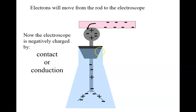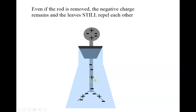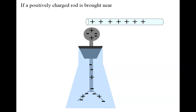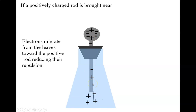If you take the rod away, all the electrons go back to normal, the leaves fall back down, and everything is normal. If you touch the electroscope with the charged rod, you'll end up negatively charging everything permanently — or as permanently as things are. When you remove the rubber rod, the leaves stay put, and in order to get it neutral again, you'll have to ground it. If you bring a positively charged rod near a negatively charged electroscope, you could temporarily reduce those effects by attracting some electrons up, and the leaves would fall back down, reducing their repulsion.